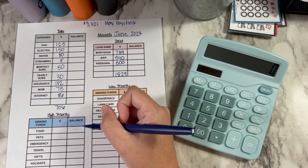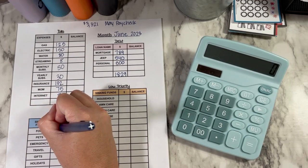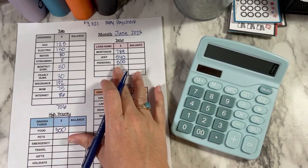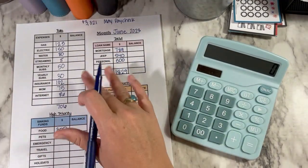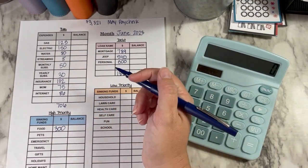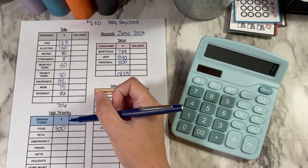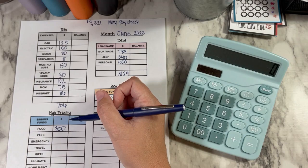Alright, so food, we're getting $300. I upped it again this month. Hopefully, I won't need it because I'm going on that trip at the end or actually at the beginning of June that first week. So hopefully, I won't use all that, but I'm having to change things up a little bit.